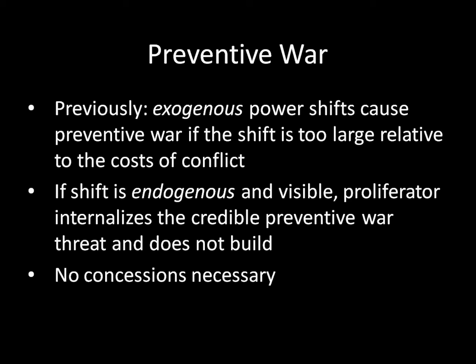That's not a smart decision—you're getting a war and wasting your investment costs in developing these weapons. So, if a power shift like nuclear proliferation is both endogenous—an active choice—and visible to opponents, and the opponent prefers launching preventive war to allowing that power shift to transpire, then a proliferator can internalize the credible threat of preventive war and choose not to build. What's interesting is the declining state doesn't have to offer any concessions or carrots. The stick—the threat of preventive war—is enough to convince the potential proliferator not to develop nuclear weapons.